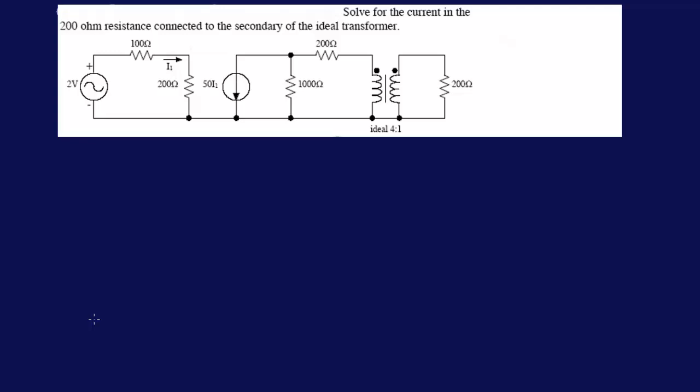Alright, so the question here is to solve for the current in the 200 ohm resistance connected to the secondary of the ideal transformer. We have 200 ohm resistors, this one and then this one, but obviously the problem is talking about the secondary of the ideal transformer, so we're talking about this one here. So let's not get confused, they are asking for us to find the current through this current over here, the secondary.